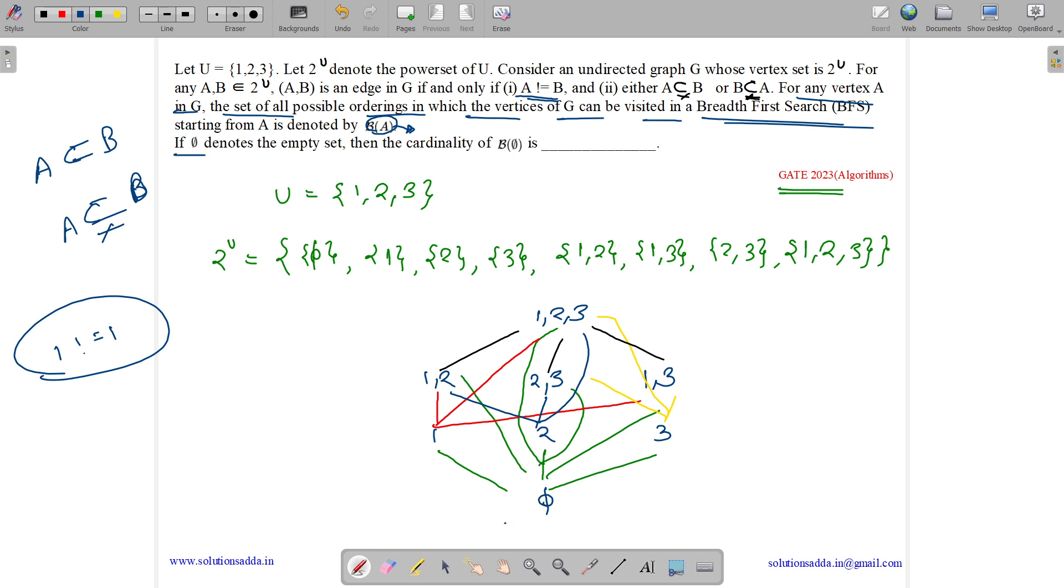If phi is the empty set, so we have phi over here, then it is asking the cardinality of B of phi. So what is its meaning? Number of breadth-first searches starting at phi. So here, as we know, phi is a proper subset of every set.